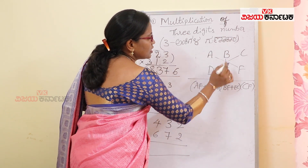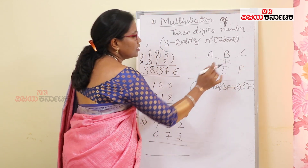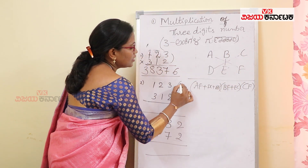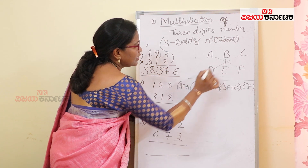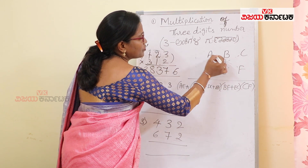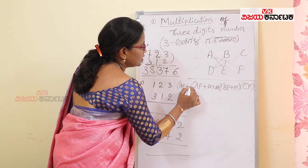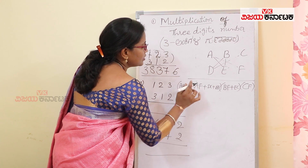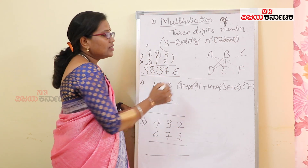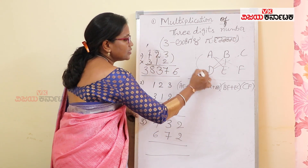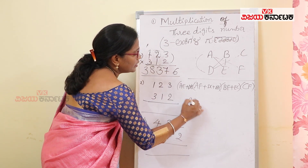For the 4-digit place, consider AE plus DB. And then the last digit is AD.